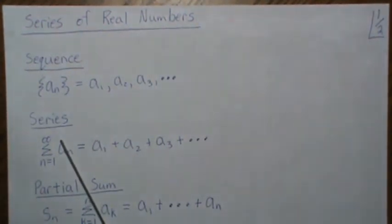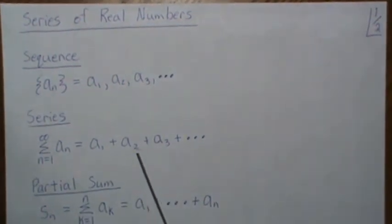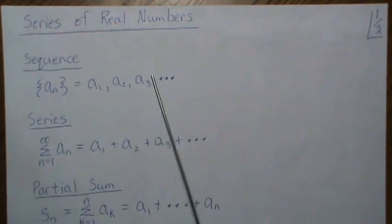Now a series means that we add up these numbers. So it's the sum of the An. So it's A1 plus A2 plus A3, etc. And this goes to infinity. Both of these do.